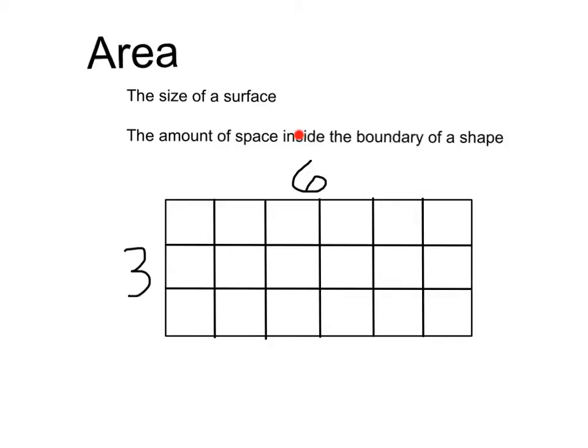Area is the size of a surface, or the amount of space inside the boundary of a shape. To picture area, we can always make this little grid showing us little squares that represent the area of a shape.